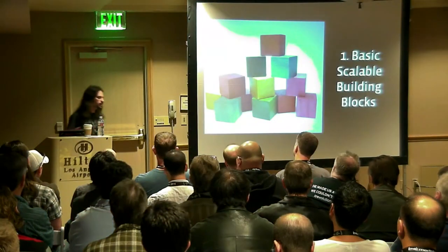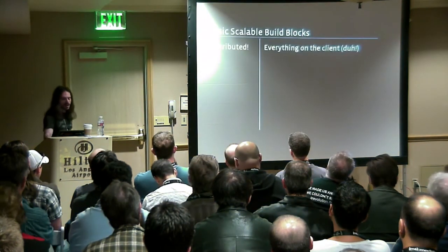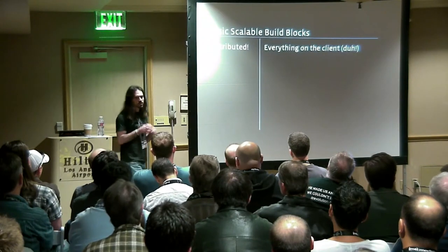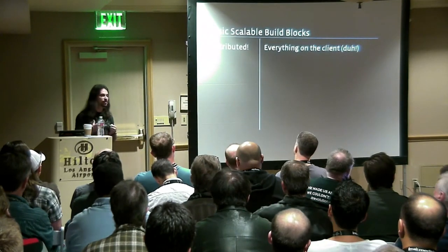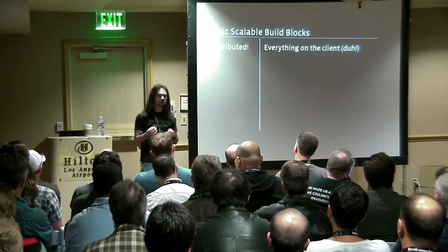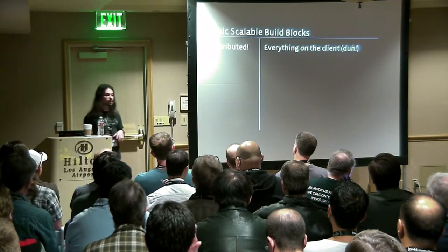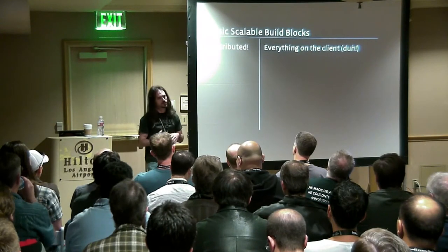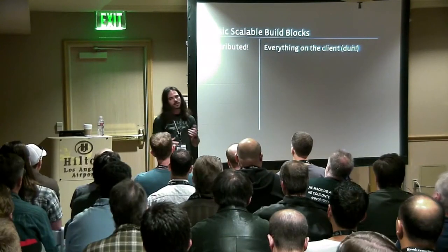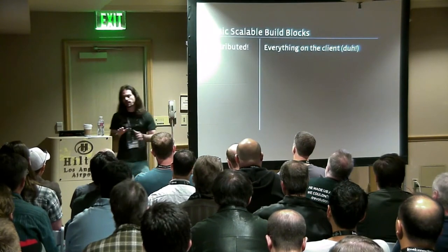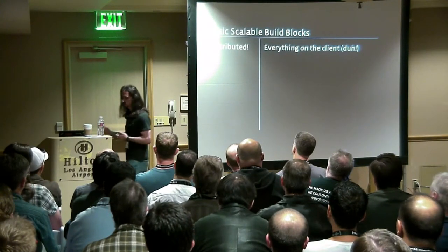Now we have a goal, so let's figure out what we need to meet it. There are three things. The first is scalable building blocks, and the first one we need is distribution — whatever system we pick has to be distributed. Whether you have 5 systems or 5,000 or 500,000, the reality is you're probably going to grow. When you add another 5, 50, or 100, you can have two problems or one: scaling your application, or scaling your application AND figuring out how to scale the one system doing all your configuration management calculations. If everything possible is done on the client, then as you scale your application you're automatically scaling your configuration management system — one less problem to deal with.